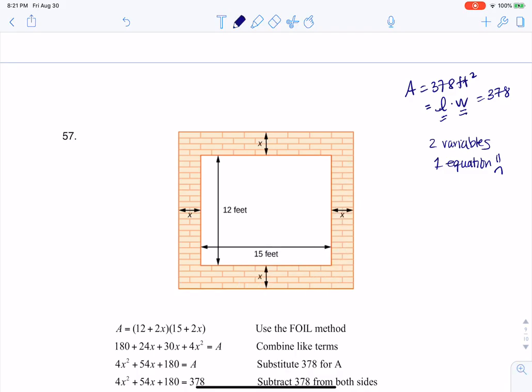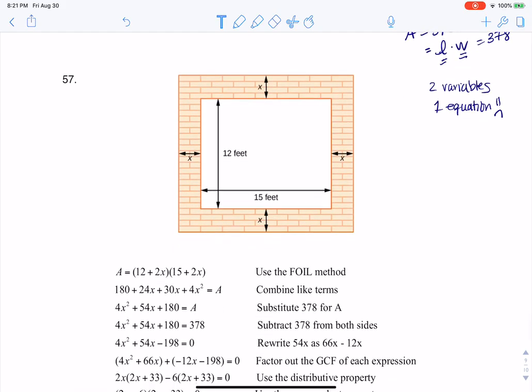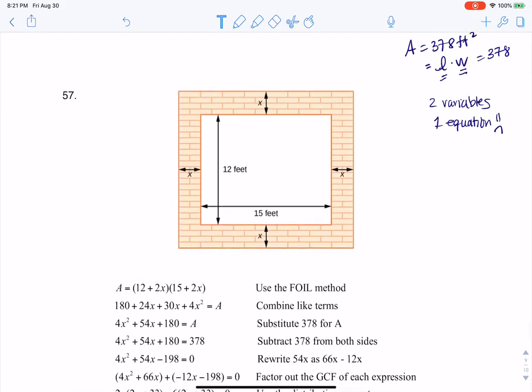So I want to get an idea of how to write length times width with just one variable. And they defined your variable here. They told you that this walkway around the perimeter, it's x feet wide. Well, I want you to imagine if we start to think of this, I can call this length and I can call this width.